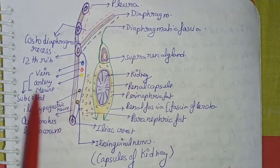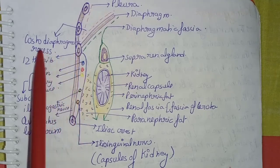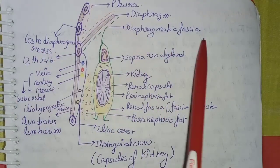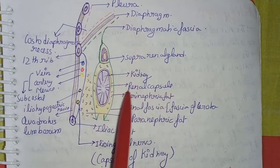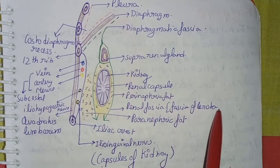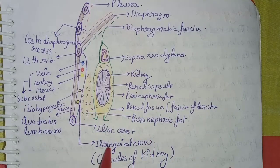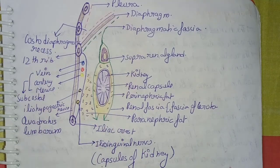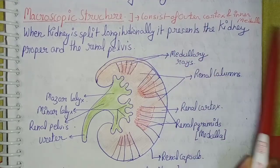You can refer to the diagram for the capsule coverings of the kidney. As shown in the diagram: subcostal vein, artery, nerve; iliohypogastric nerve; twelfth rib; diaphragmatic fascia; suprarenal gland; then the kidney itself; then the renal capsule; then the perinephric (adipose) fat; then the renal fascia (fascia of Gerota); then the paranephric fat; and also the iliac crest, ilioinguinal nerve, and quadratus lumborum muscle.